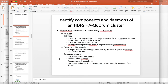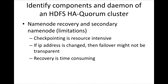Now let us talk about the limitations. Checkpointing is resource intensive, and over time checkpointing might not happen, and it is challenging to keep track of whether checkpointing is happening or not. Also, as part of the recovery process, if a motherboard fails in the name node, we have to get a new physical server and install name node on it. Then we have to restore and recover. In some cases the IP address of the new physical host may have to be changed, and in those cases the failover to the new name node is not transparent.